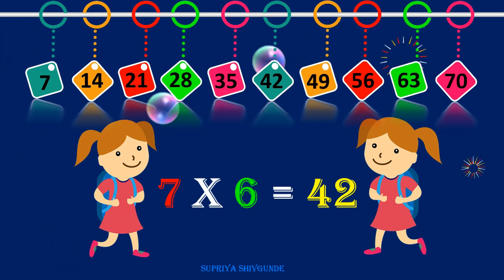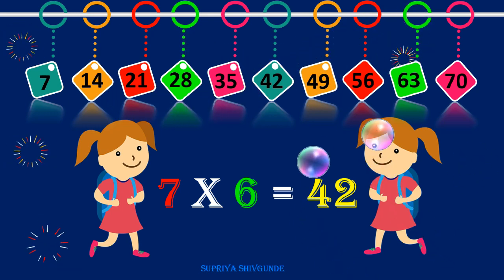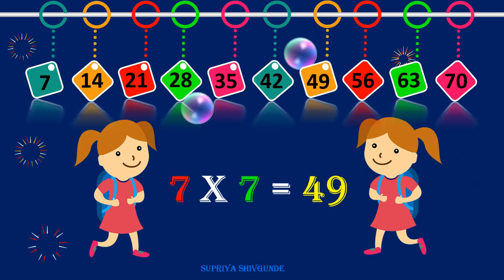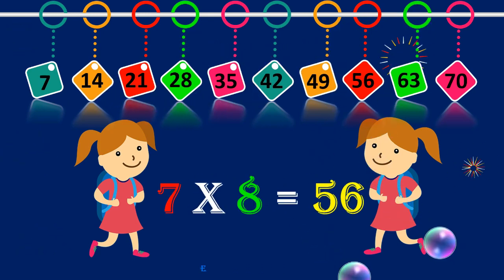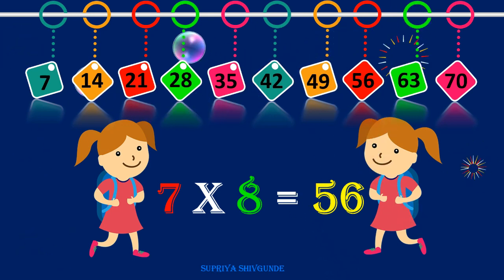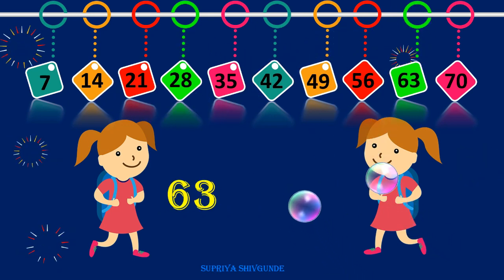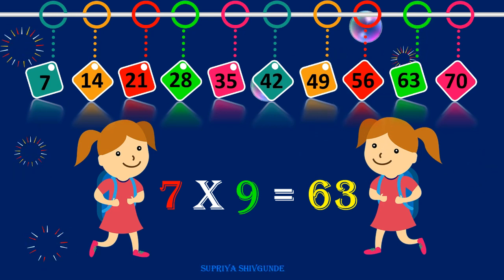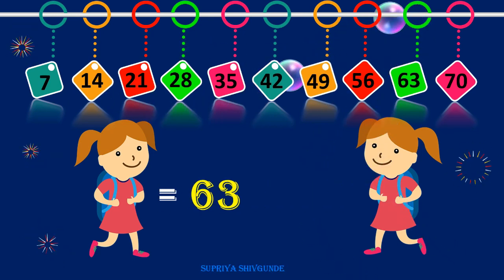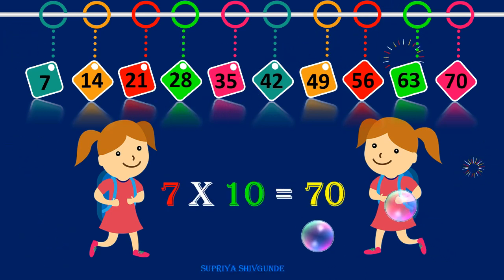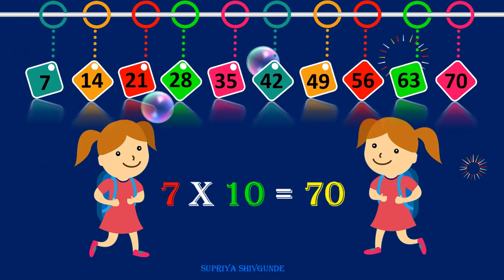7 sixes are 42, 7 sixes are 42. 7 sevens are 49, 7 sevens are 49. 7 eights are 56, 7 eights are 56. 7 nines are 63. 7 tens are 70, 7 tens are 70.